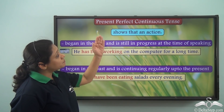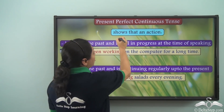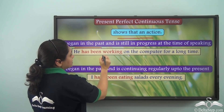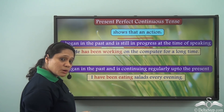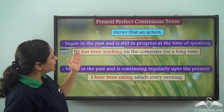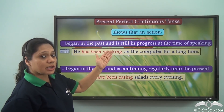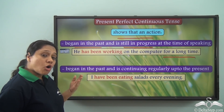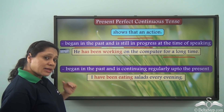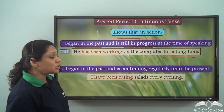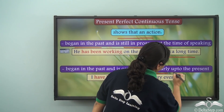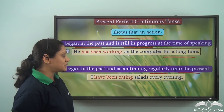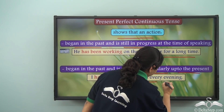We know that the present perfect continuous tense shows that an action began in the past and is still in progress at the time of speaking. For example, 'He has been working on the computer for a long time.' It also shows an action that began in the past and is continuing regularly up to the present. For example, 'I have been eating salads every evening.'